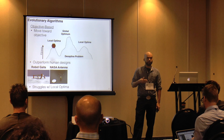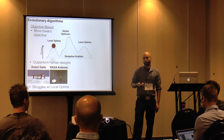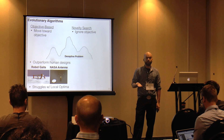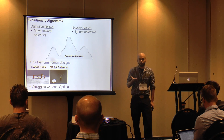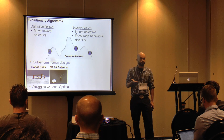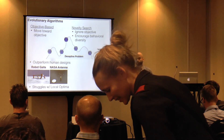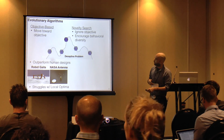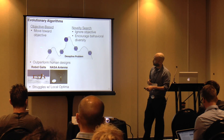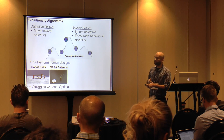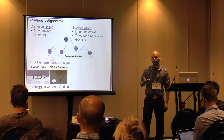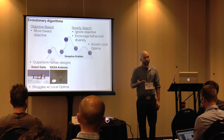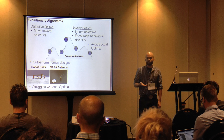Knowledge Research was created to circumvent deceptive problems. In Knowledge Research, we're going to completely ignore the objective. Instead, what we want is to encourage behavioral diversity. In this simple representation, we have robots that explore the search space, get a lot of diversity, and lo and behold, we find that global optimum — helping us avoid local optima.